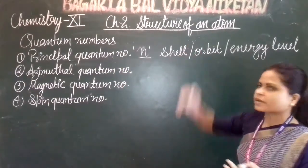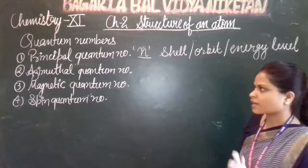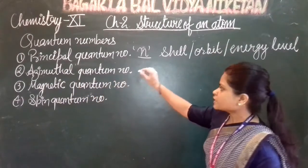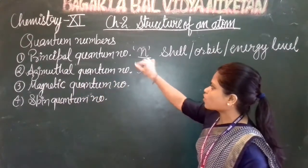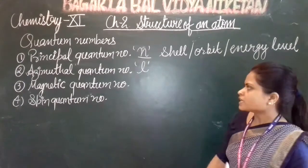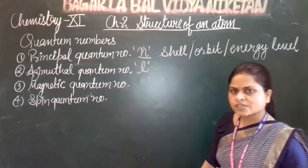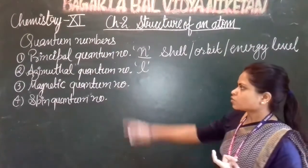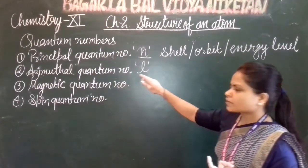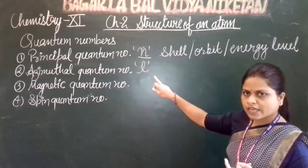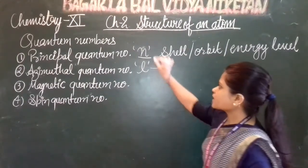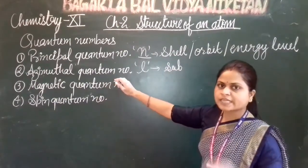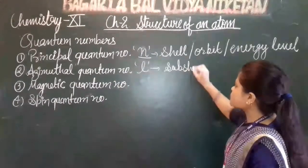The azimuthal quantum number is also called the subsidiary quantum number. It is represented by small l, and it tells us about the sub-shells of the atom.